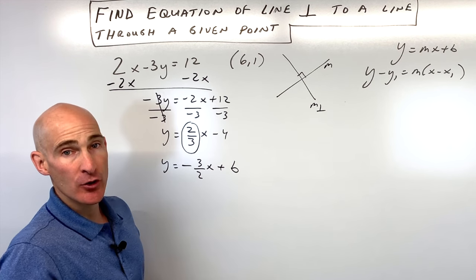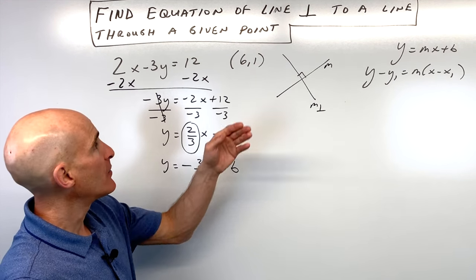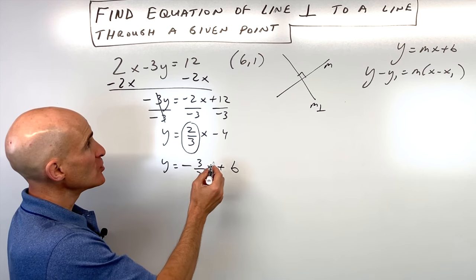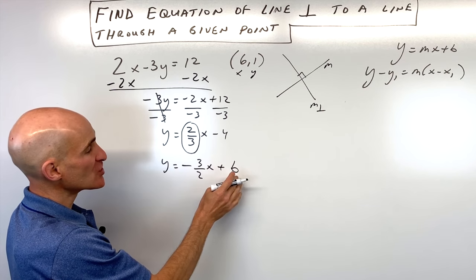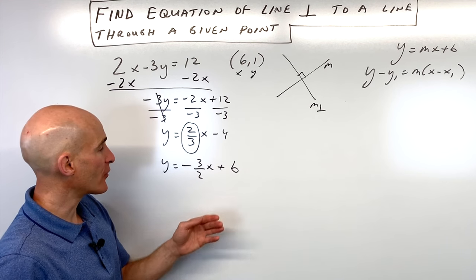But we don't know the b value. We don't know where it crosses the y-axis. That's why they give us this point (6, 1). We're going to put the 6 in for x and the 1 in for y so that we can solve for our y-intercept, our b value.